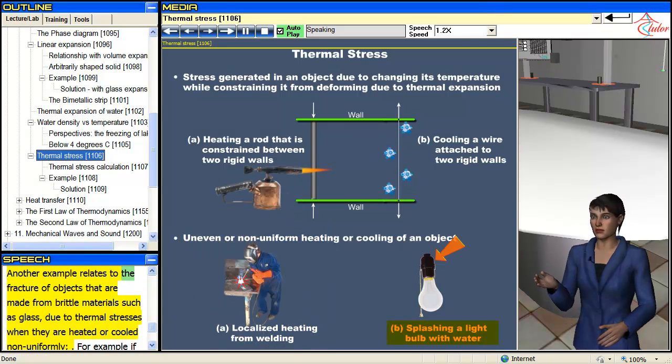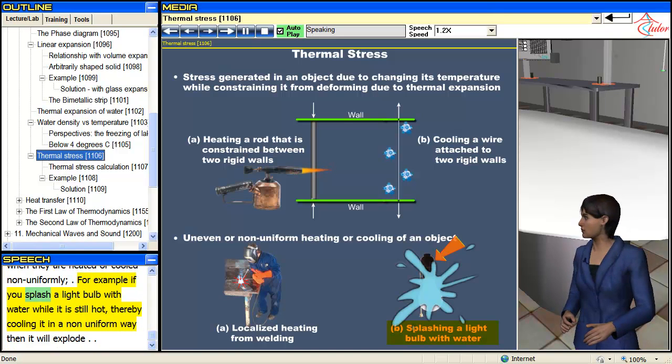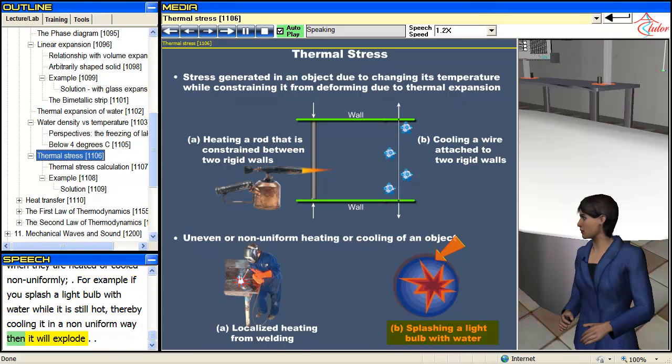Another example relates to the fracture of objects that are made from brittle materials such as glass, due to thermal stresses when they are heated or cool non-uniformly. For example if you splash a light bulb with water while it is still hot, thereby cooling it in a non-uniform way, then it will explode.